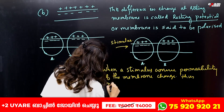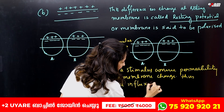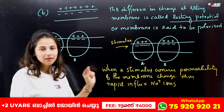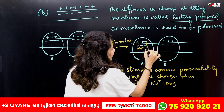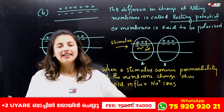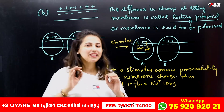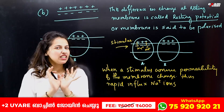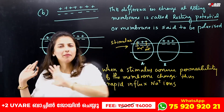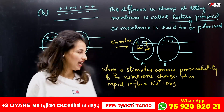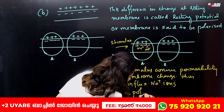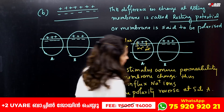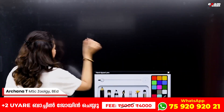There is a rapid influx of sodium ions. When sodium ions rush into the membrane, the polarity at site A is reversed. The inside becomes positive and the outside becomes negative at that point. This reversal is called the impulse.